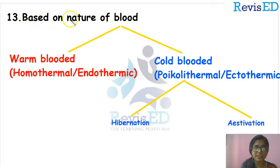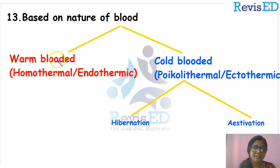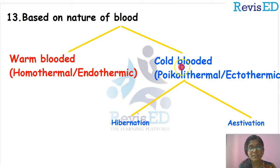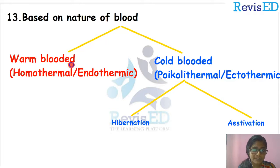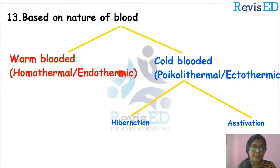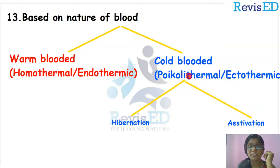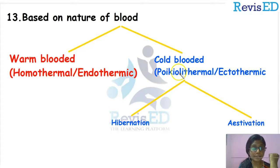Based on the nature of blood, animals are classified into two categories. The first category is known as warm-blooded animals, and the second category is known as cold-blooded animals. Warm-blooded animals are otherwise known as homothermal animals or endothermic animals.